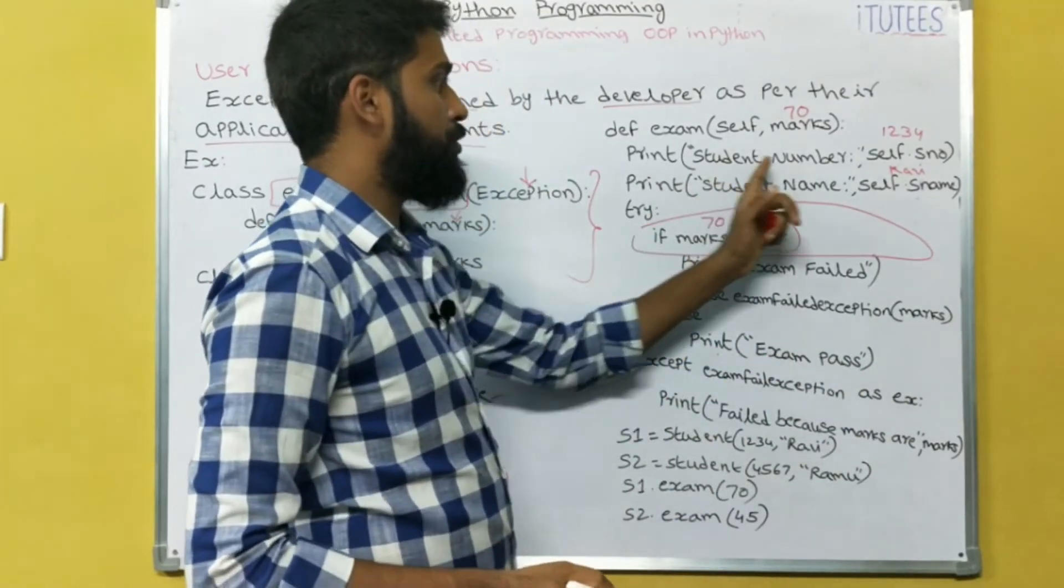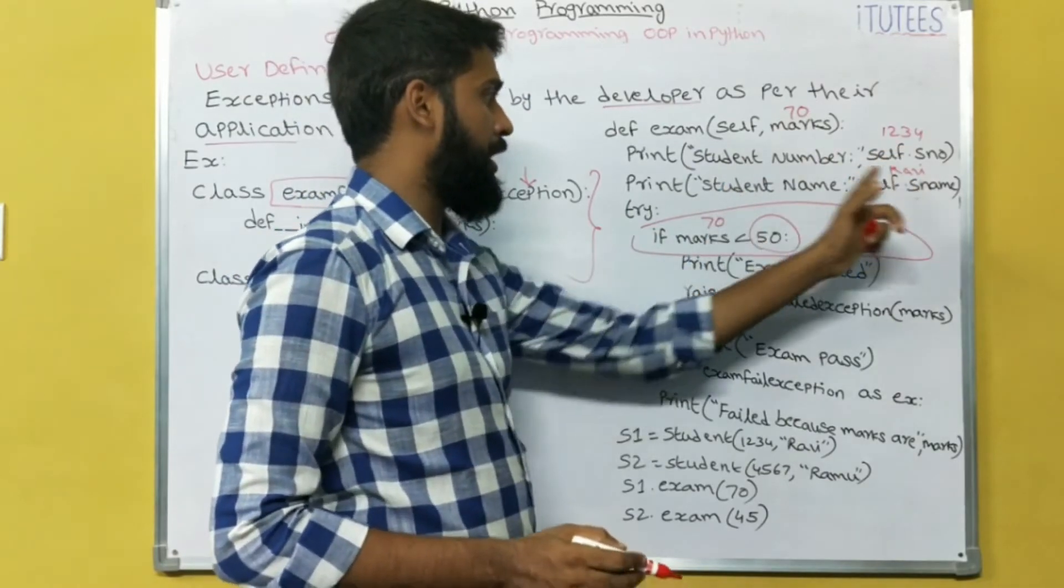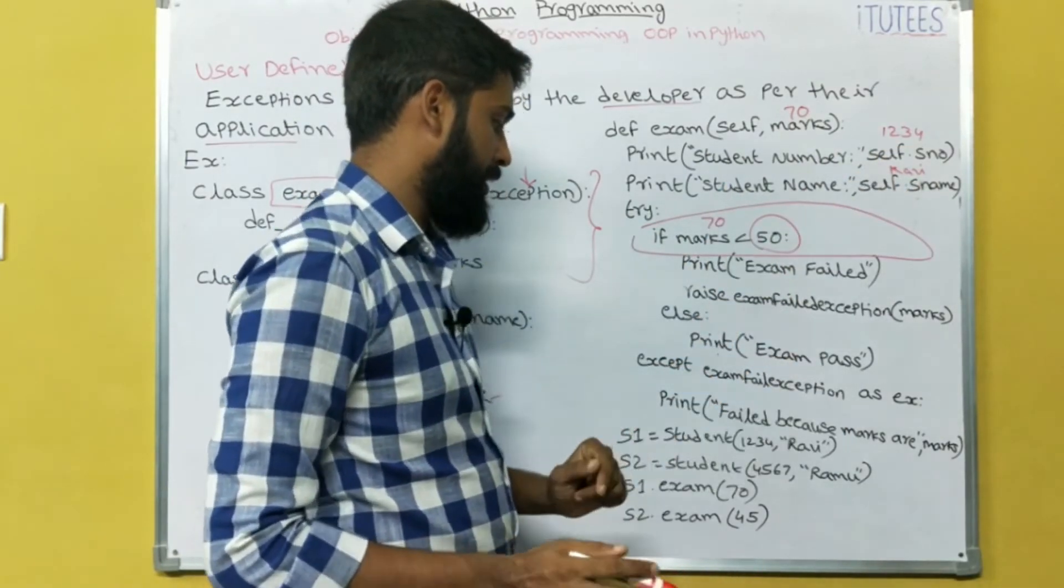What is the output? Student number 1234, student name Ravi, exam pass. That's it.